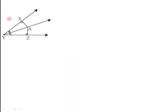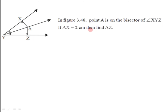The question is based on the given diagram. Point A is on the bisector of angle XYZ. If AX is equal to 2 cm, find the length of segment AZ.